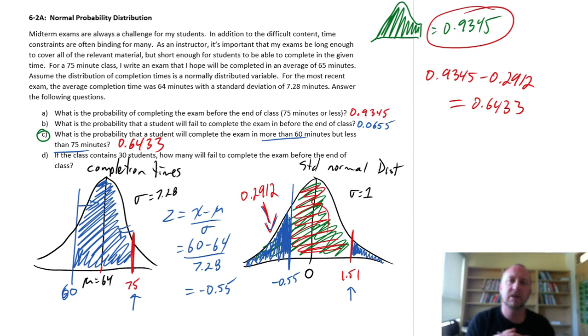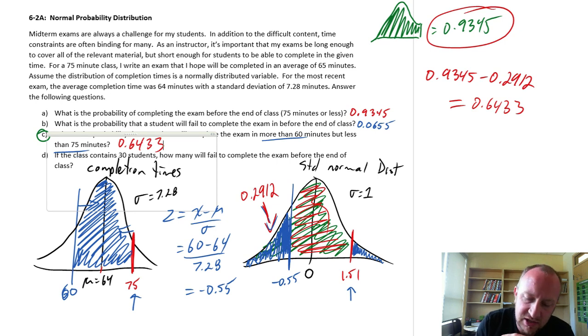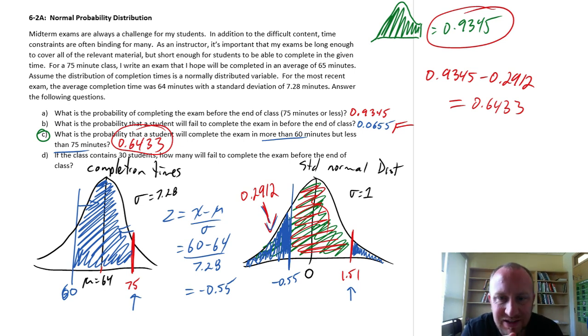Okay, good. So we've got all of our probabilities, finishing before class, failing to finish before the end of class, and finally finishing the probability of finishing between 60 and 75 minutes. Okay, part D.